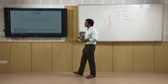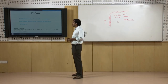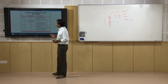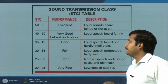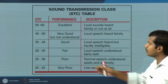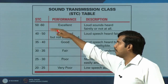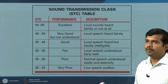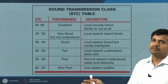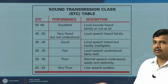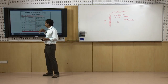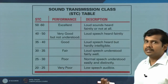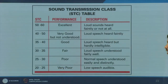Simply put, a sound transmission class between 40 to 50 is considered very good. Above 40 is typically good between rooms — even if there is about 80 dB of sound on the other side, you will get 35 to 40 dB on your side with STC in this range. Below that is fair, and STC ratings of 20 to 25 are very poor.